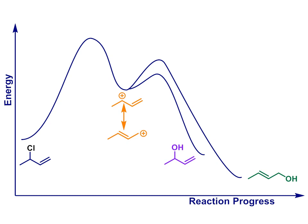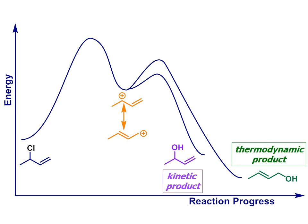The carbocation can then react with a nucleophile at either C1 or C3 to give two different products. Nucleophilic attack at C3 is faster, i.e. gives the kinetic product. But attack at C1 gives the more stable thermodynamic product, shown in green. Varying the reaction conditions will vary the ratio of those two products that are formed.